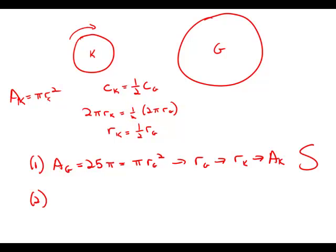Statement number two tells us that the edging around G — the circumference of G — is 10π meters long. Then we know that the edging around K is half of that: 5π meters long. That's the circumference, which equals 2πR, so that would allow us to figure out the value of R_K, which would allow us to figure out the value of the area of K. So this statement is perfectly sufficient.